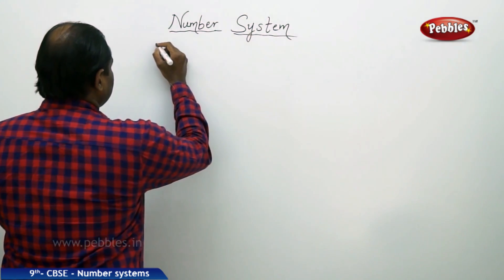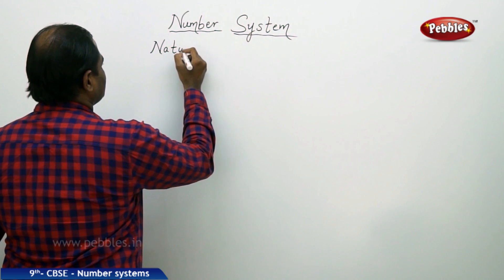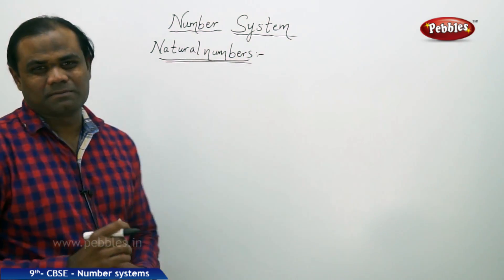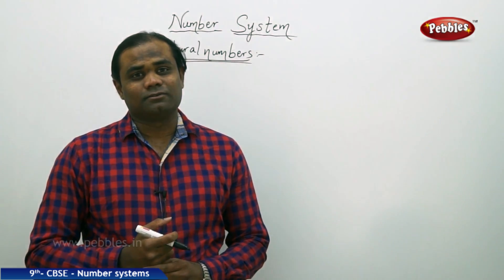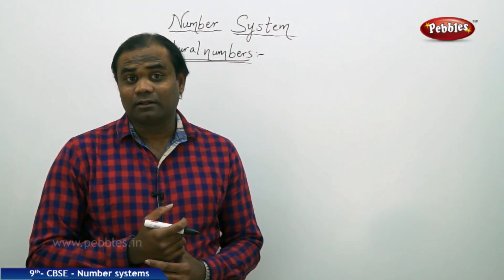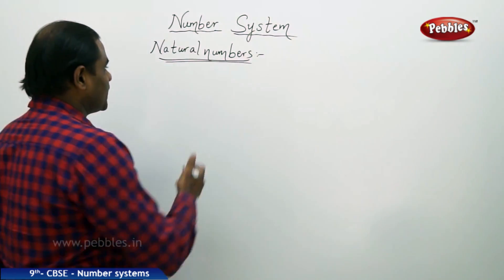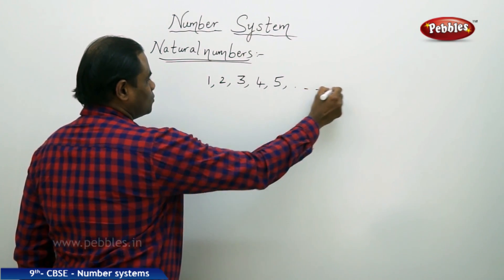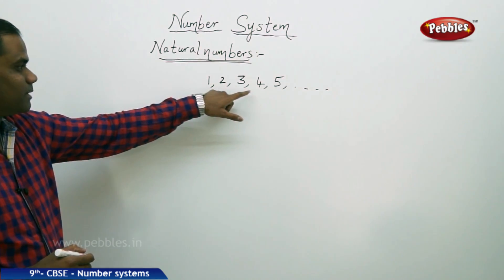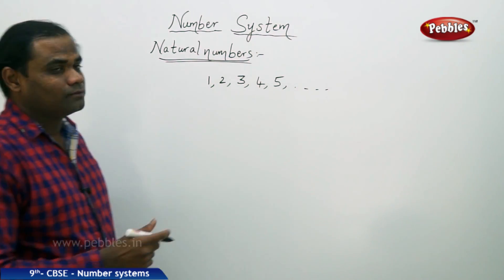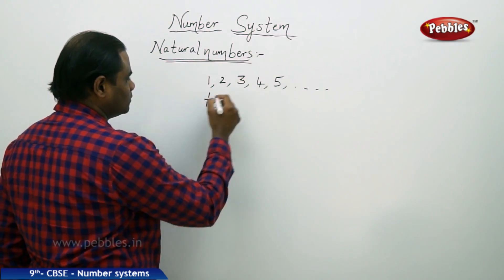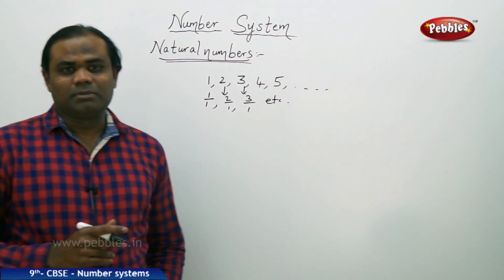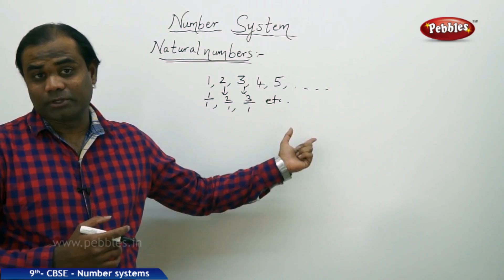Coming to natural numbers — what are natural numbers? Natural numbers are the numbers which cannot be expressed in fraction form other than the denominator being 1. For example, natural numbers start from 1, 2, 3, 4, 5, and so on. They cannot be expressed in fraction form, but can be expressed as a whole with denominator 1 — for example, 1/1, 2/1, 3/1, and so on. So natural numbers cannot be expressed in fraction form other than with denominator 1.